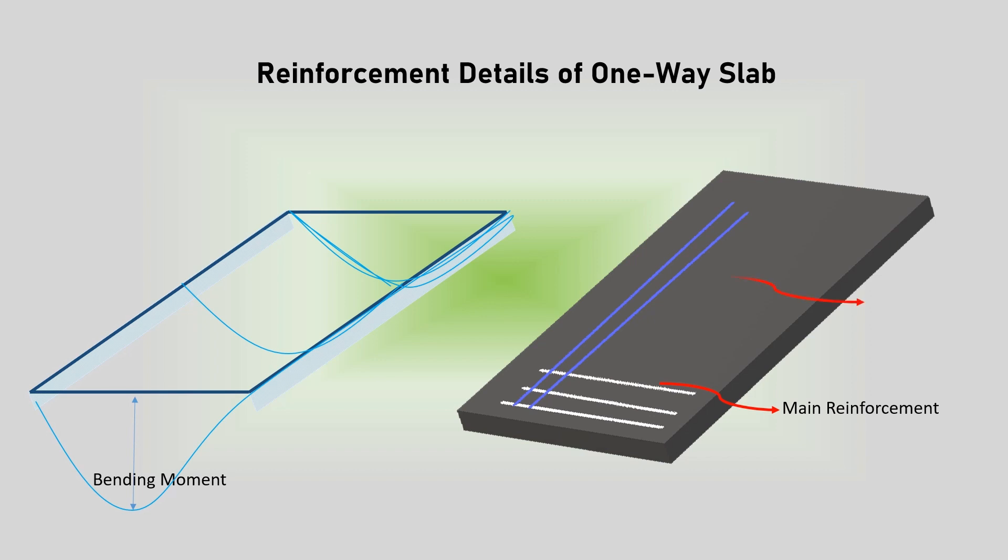In addition, secondary reinforcement is also provided perpendicular to the main reinforcement to help control cracks from drying shrinkage or thermal contraction. Hence, this particular reinforcement is called temperature reinforcement or temperature steel.